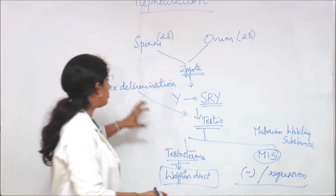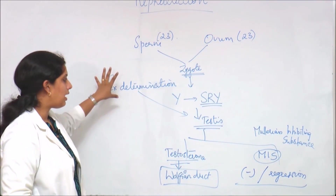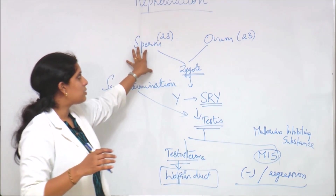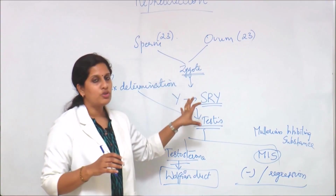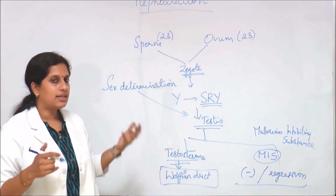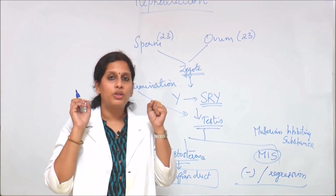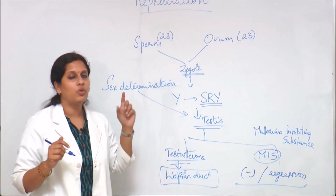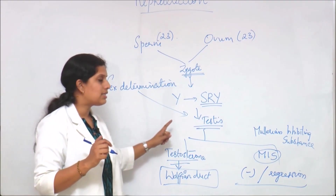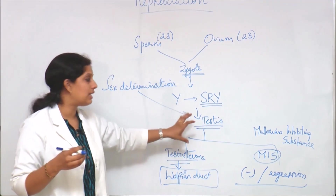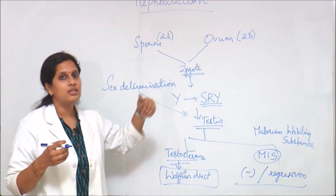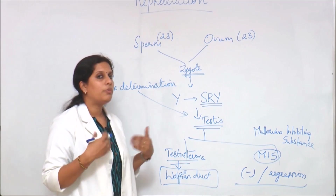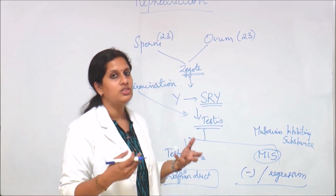To summarize sex determination and sexual differentiation: sperm and ovum fuse to form the zygote. Sex determination depends on the genes present in the chromosome. If the SRY gene is present on the Y chromosome, the gonad develops as a testis, and due to the effects of testosterone and Mullerian inhibiting substance, there will be proliferation of Wolffian duct derivatives.